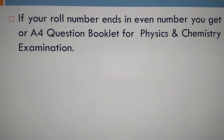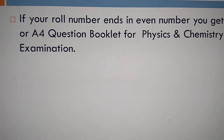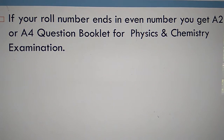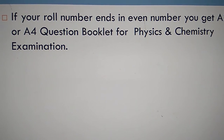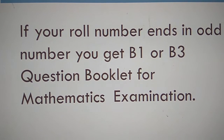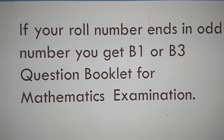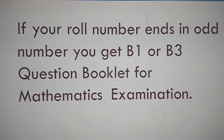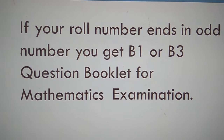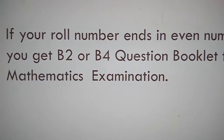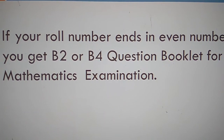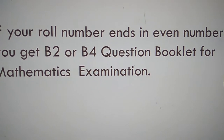If your roll number ends in an even number, you will get the A2 or A4 question booklet for Physics and Chemistry, and the B2 or B4 question booklet for the Mathematics examination.